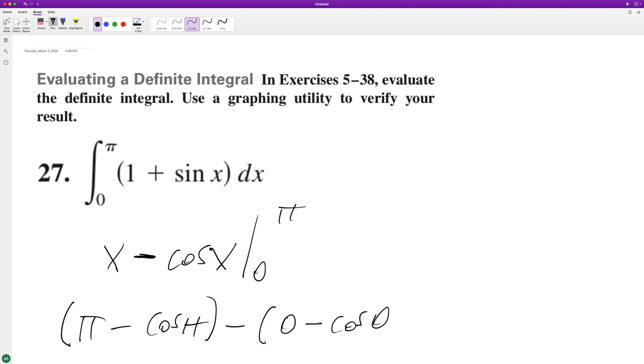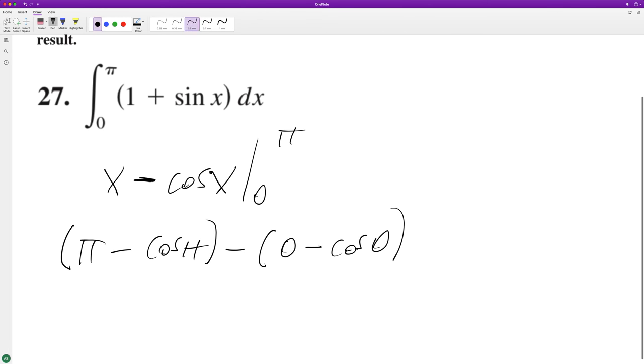Which is actually a value. So we end up with pi minus negative one minus cosine of zero is one, so negative one.